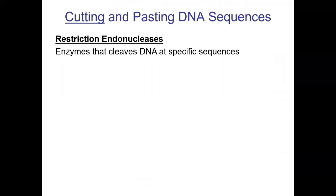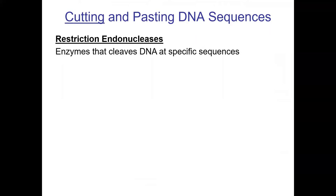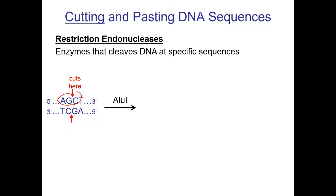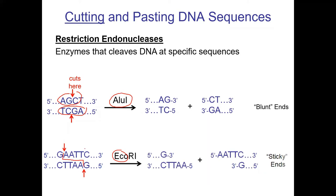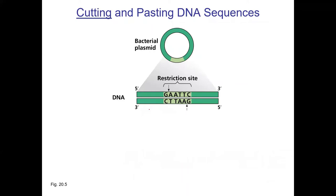Another DNA tool is cutting and pasting. There are enzymes called endonucleases — specifically restriction endonucleases — that recognize very specific sequences. For example, the sequence AGCT reads the same backward on the other strand; the enzyme Alu1 cuts at that site. EcoR1 comes from E. coli and makes a 'sticky end' cut. These are essentially precision molecular scissors.